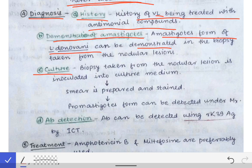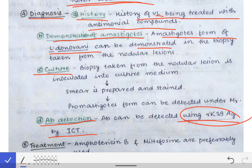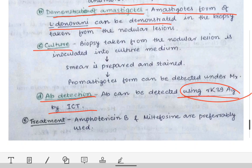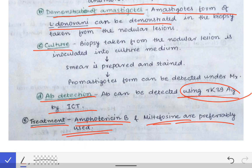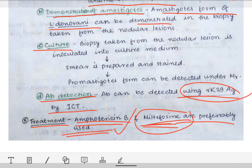Treatment of PKDL is preferably by Miltefosine, which is mostly used nowadays. For visceral leishmaniasis, Amphotericin B or sodium stibogluconate are used. This is all about the LD body and PKDL — these are very important topics and one must know them thoroughly.